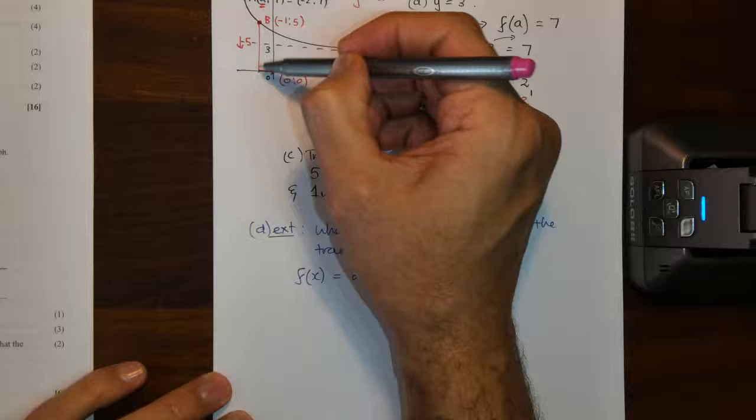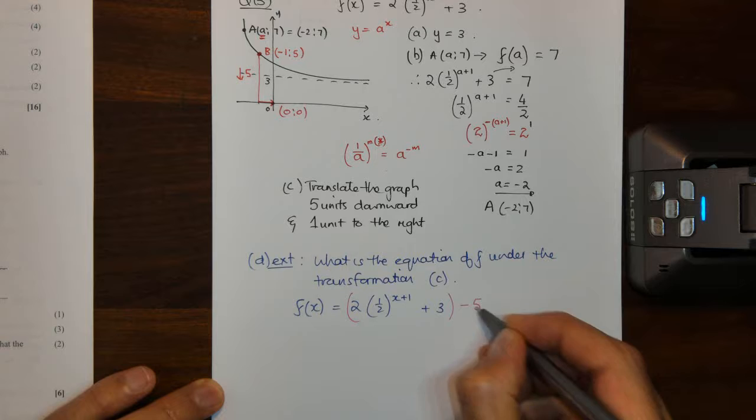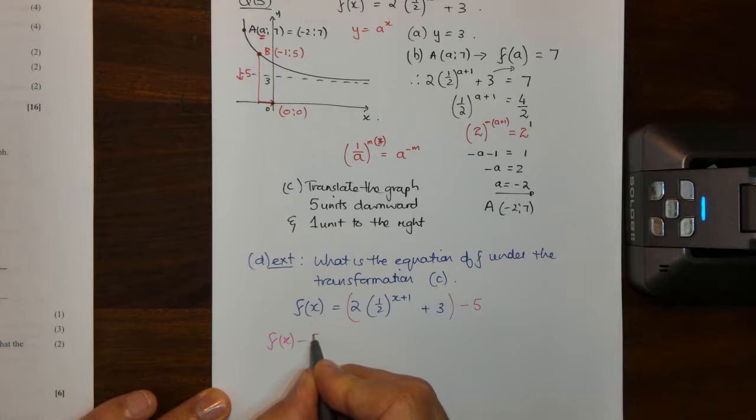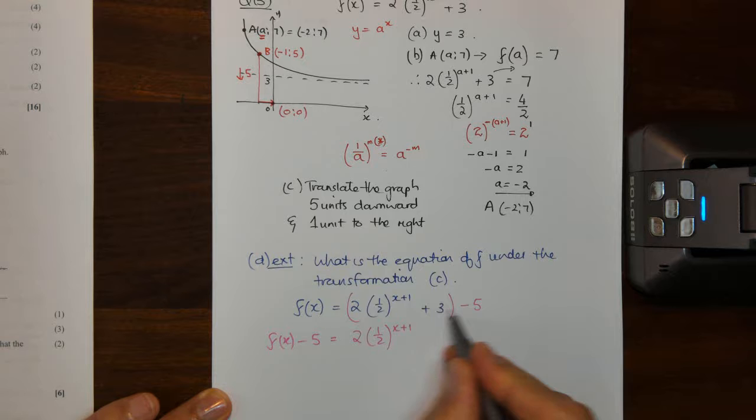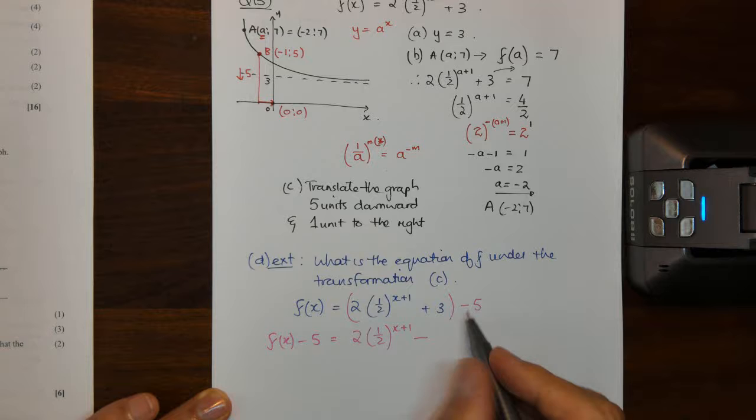So we are going to go down five which means this has a minus five connected to it. So now the curve becomes F of X minus five to make use of that transformation. This will be twice, it does not affect the X but it does affect the Y value, so this will be plus 3 minus 5 which gives you a minus 2.